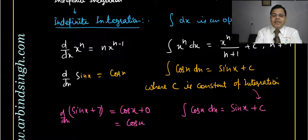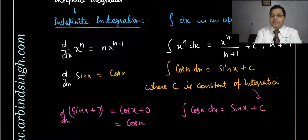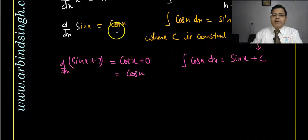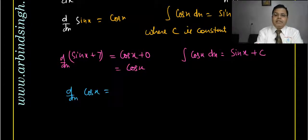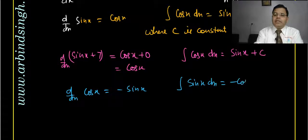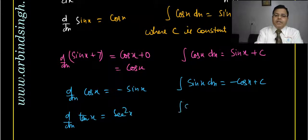The constant C is written for any unknown constant that may be present in the original function. If there is no constant, C could be zero, but we should always write C. Since d/dx of cos x = −sin x, the integration of −sin x = cos x, or integration of sin x = −cos x + C. Also, since d/dx of tan x = sec²x, the integration of sec²x dx = tan x + C.